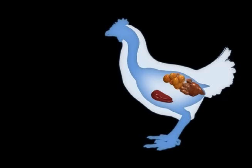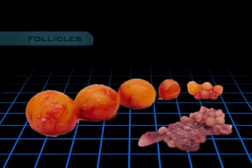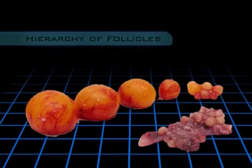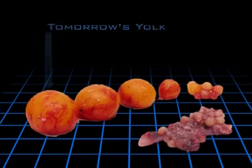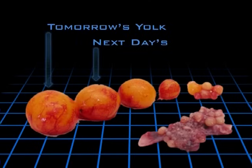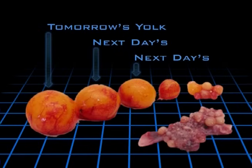In the ovary, tiny tissue bags called follicles fill with yolk and grow. The largest follicle on the ovary will release the yolk of the egg the hen will lay tomorrow, while the next largest will produce the next day's yolk, and the next largest will yield the next day's yolk, and so on.